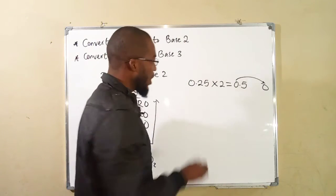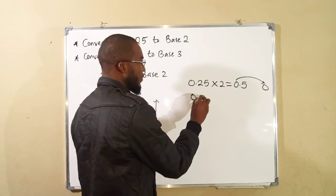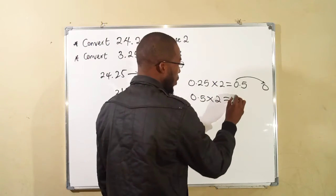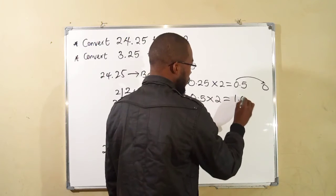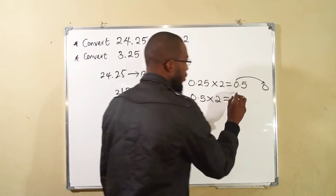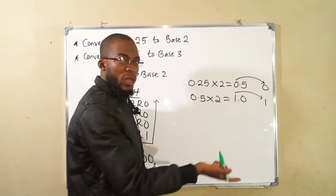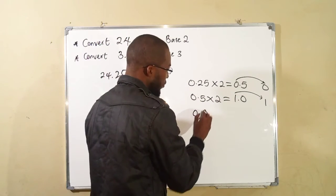Taking away 0, we have 0.5. Multiply it by 2 again. This will be 1.0. Take away the whole number. Taking away 1, we will be left with 0.0.